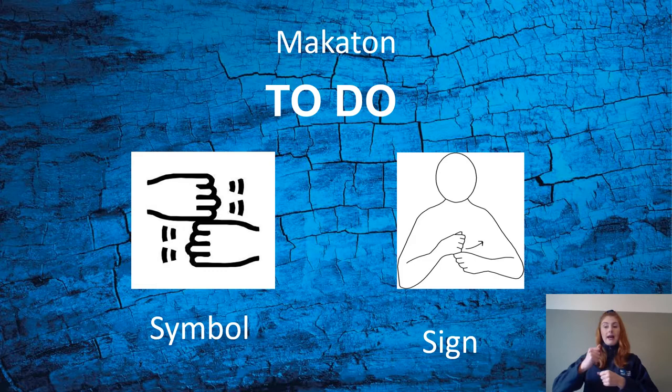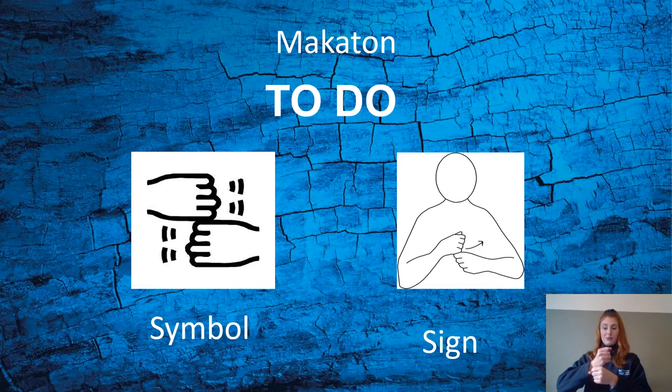For the sign 'to do', we want to make two fists and put your dominant hand — the hand that you use most — on top of the other. As we say the word 'to do', we want to take the top hand and bang it off the bottom one and give it a little scoop like that. To do. To do.